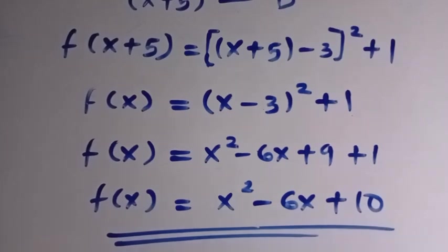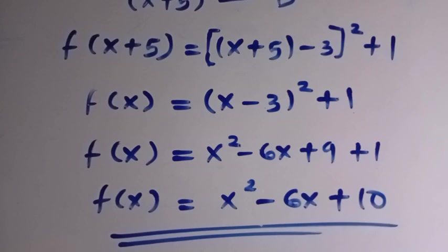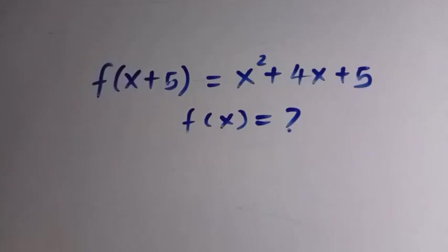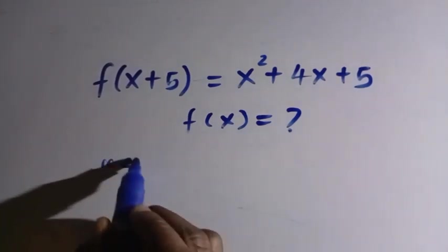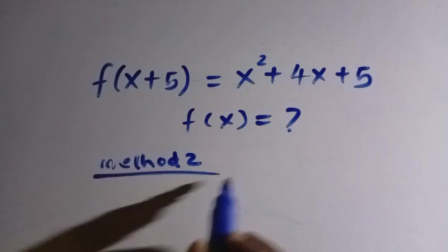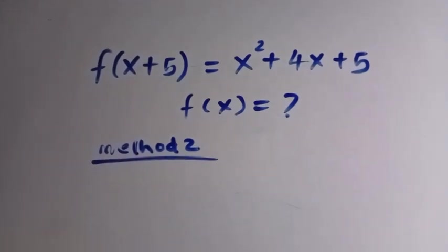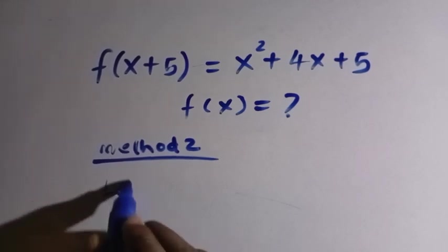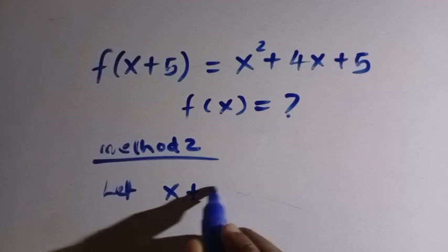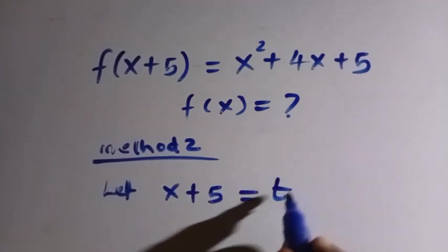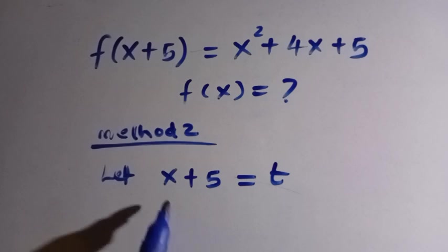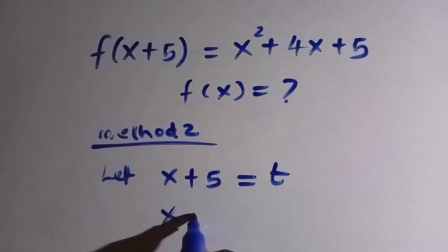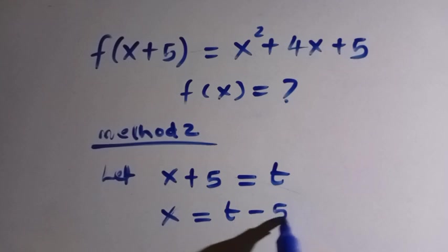Now let's see another method of solving this. Let's consider Method 2 and see which one is more effective for solving these functional equations. For the second method, I'm going to apply the substitution method. From the domain, which is x plus 5, I let x plus 5 equal to t. Then I make x the subject of the formula, so x equals t minus 5.